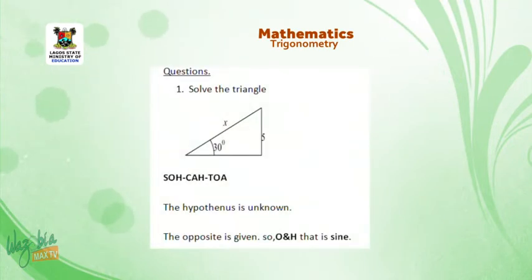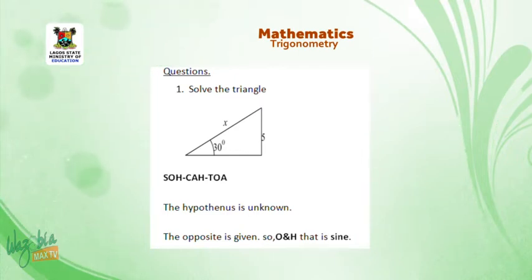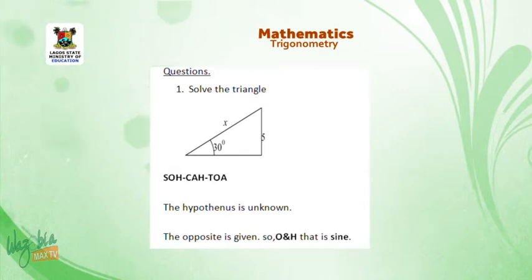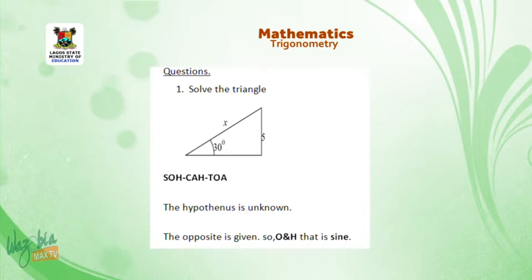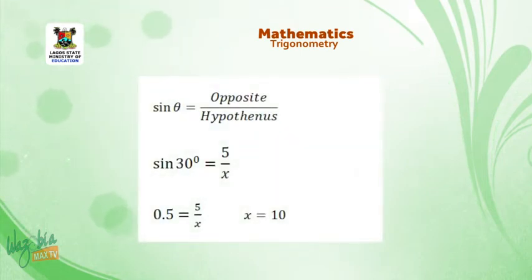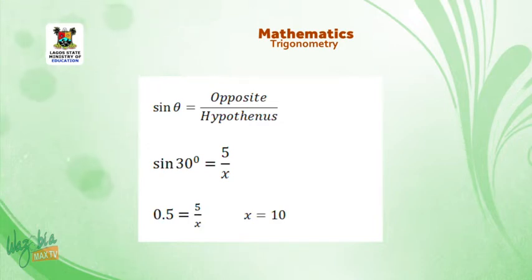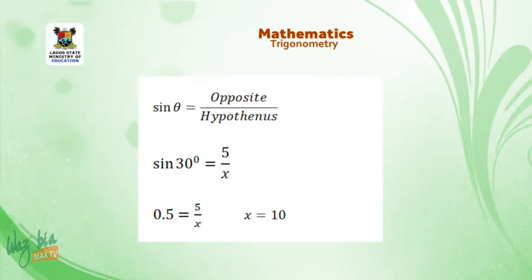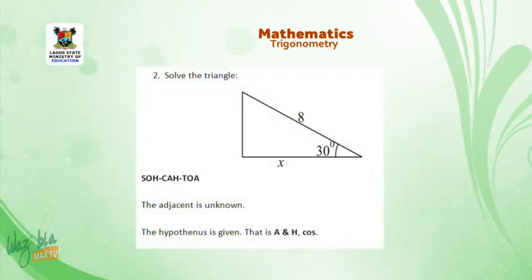Example: solve a triangle where the hypotenuse is x centimeters (unknown), the opposite side is 5, and the angle is 30 degrees. Write out SOHCAHTOA. We have the opposite and are looking for the hypotenuse — that corresponds to SOH (sine). So sin 30° = opposite over hypotenuse = 5 over x. Since sin 30° = 0.5, we get 0.5 = 5/x, and cross-multiplying gives x = 10 centimeters.